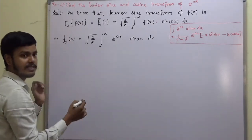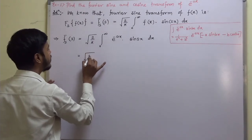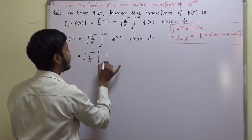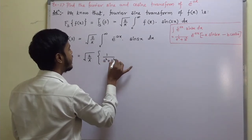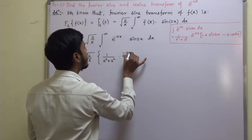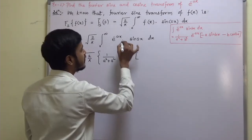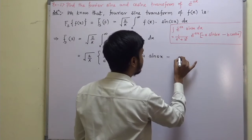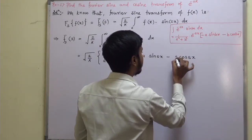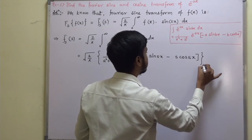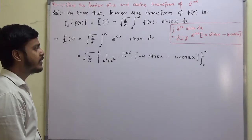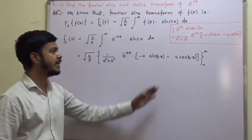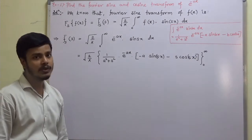Apply this formula. It should be under root 2 by pi, in bracket: 1 upon (a squared plus s squared) into e to the power minus x, into minus a sin(sx) minus s cos(sx), and the limits are 0 to infinity. Now substitute x equals infinity first and x equals 0 second.